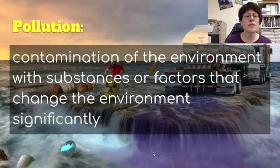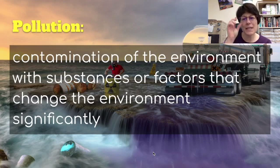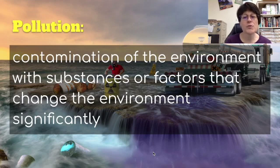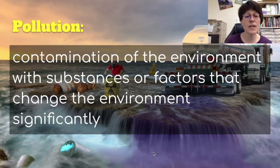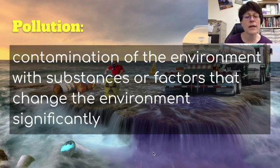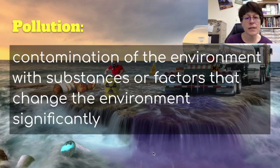So what is pollution? Pollution is contamination of the environment with substances or factors that change the environment significantly. We can contaminate any part of our environment. There is air pollution produced by factories, cars, and vehicles putting gases into the air. There is water pollution where we are dumping things into the water, whether they be chemicals, chemical waste, or any other things — garbage thrown into the water, or leakage of things like mercury and other chemicals.